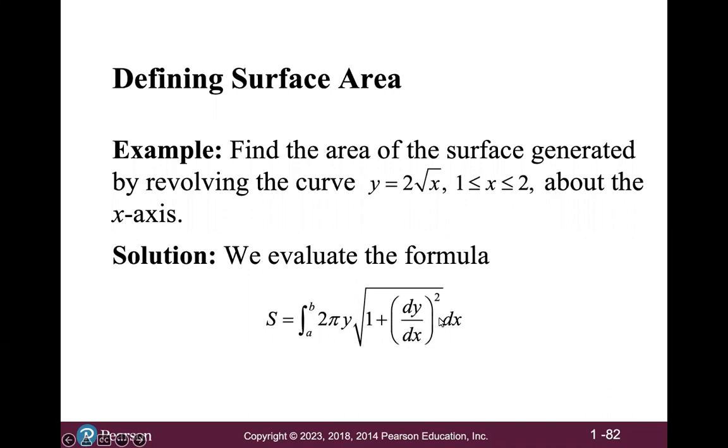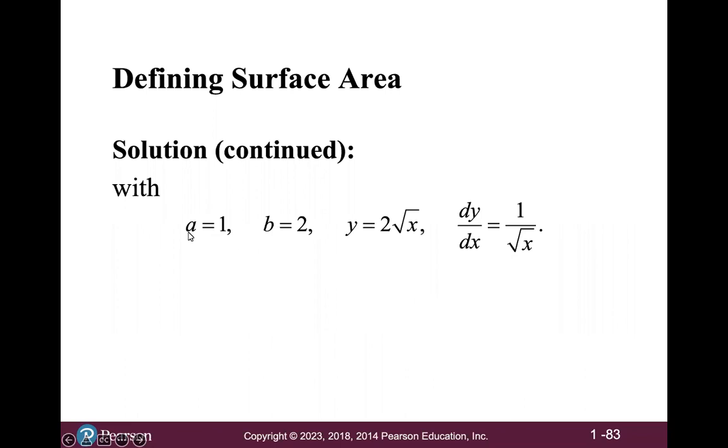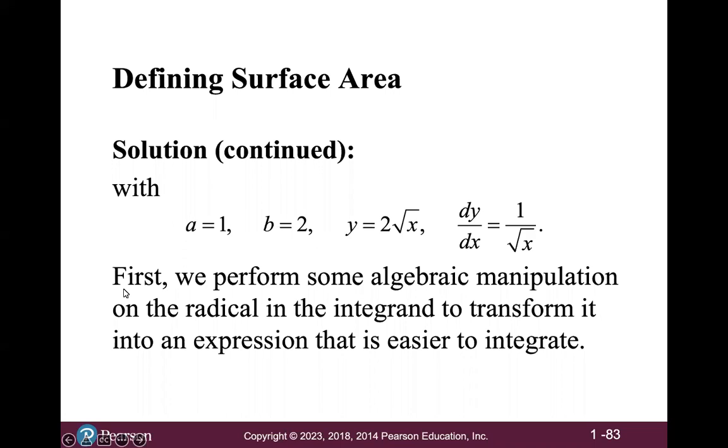So evaluating this formula, we have a equals 1, b equals 2, y equals 2 times the square root of x. And hopefully you can easily verify that the derivative of that is 1 over the square root of x. We don't have any problems with continuity in this problem because we are not trying to start at x equals 0. We're starting at x equals 1. So over this entire interval, that derivative is continuous. So we can use this formula. Now in this example, we are going to have to perform a little algebraic manipulation on the radical to transform it into an expression that is easier to integrate. And I'll walk you through that step by step.